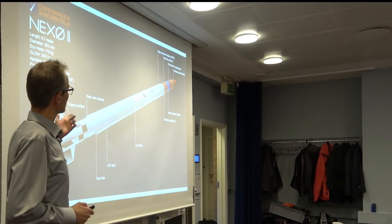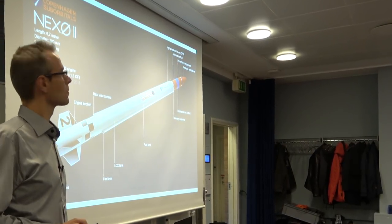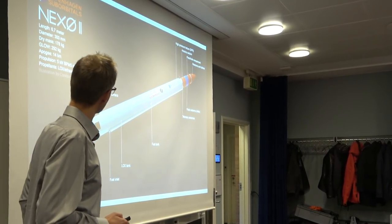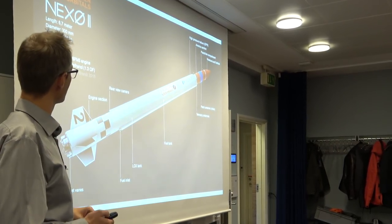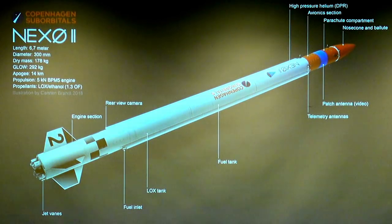So if you remember, Nexo 1 hit the water at 500 kilometers an hour and it bent a little bit. It's a very heavy rocket. So it has a theoretical apogee of about 14 kilometers with the amount of propellant that it can hold. It's propelled by our own BPM 5 engine, 5 kilonewtons, and it runs on liquid oxygen and ethanol.